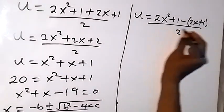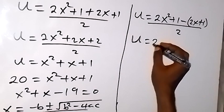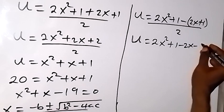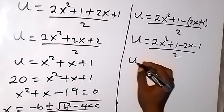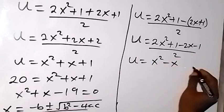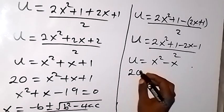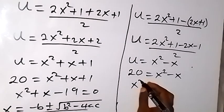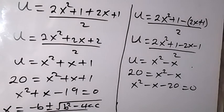For Case 2: u equals (2x squared plus 1 minus 2x minus 1) over 2. The plus 1 and minus 1 cancel, leaving 2x squared minus 2x over 2, so u equals x squared minus x. Since u equals 20, we get x squared minus x equals 20.